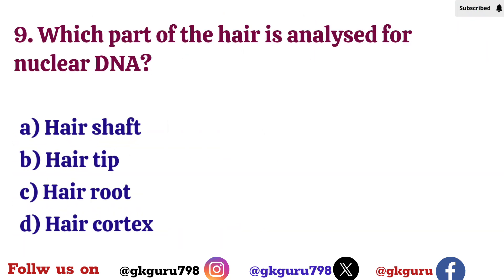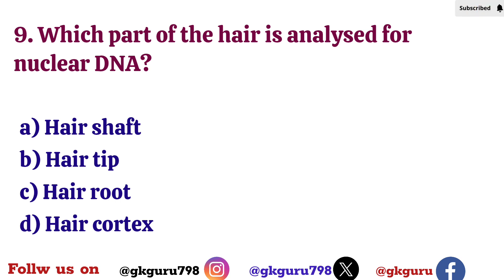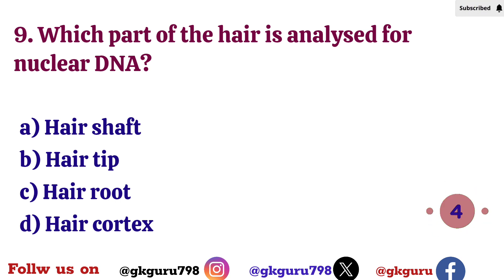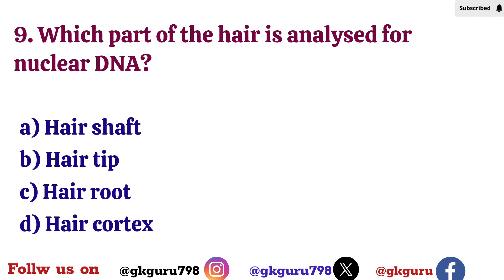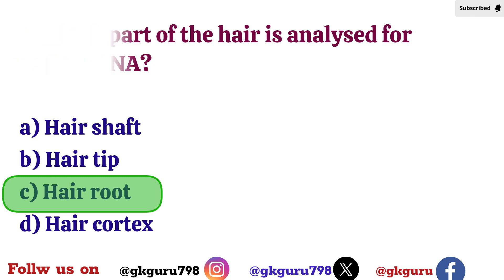Ninth question: Which part of the hair is analyzed for nuclear DNA? Option A: Hair shaft. Option B: Hair tip. Option C: Hair root. Option D: Hair cortex. Correct answer: Option C — Hair root.